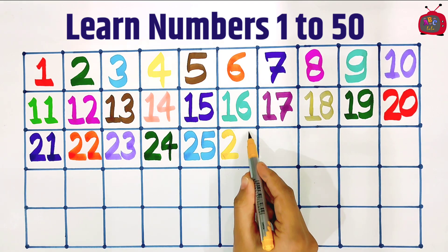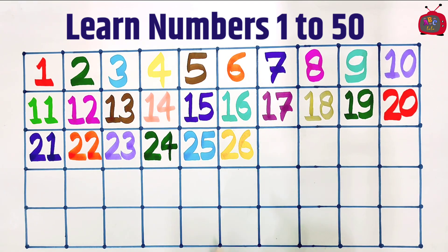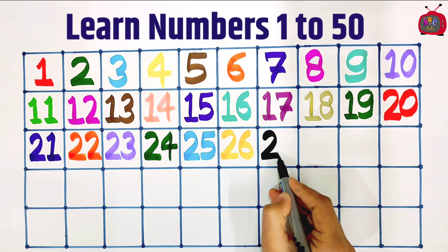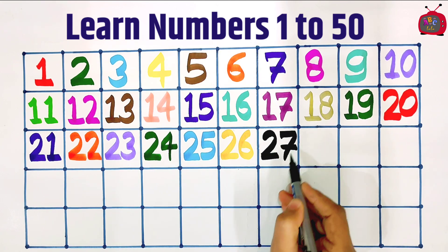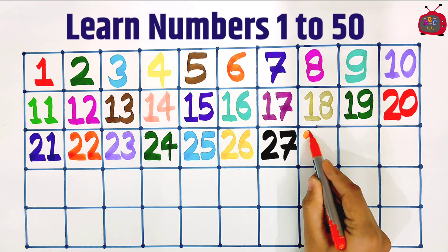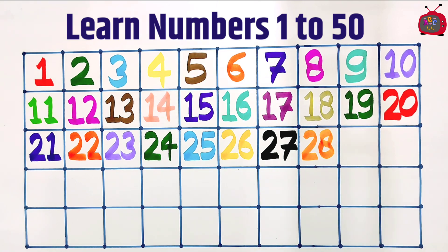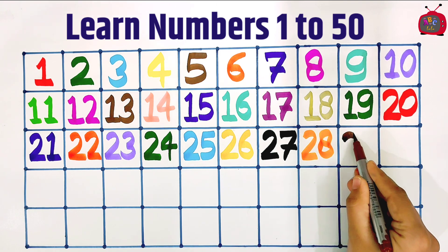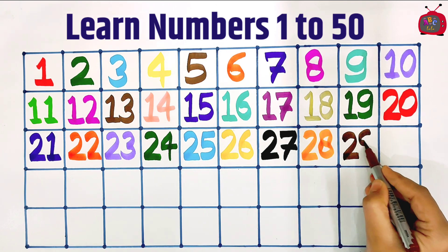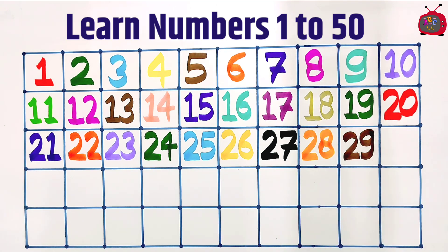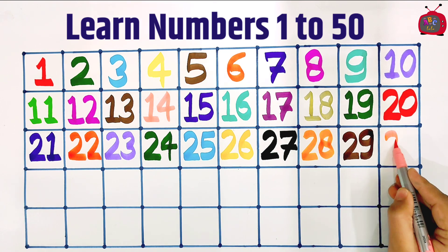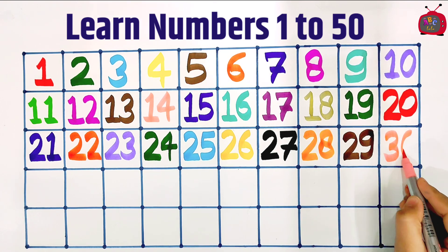Two, six: twenty-six. Two, seven: twenty-seven. Two, eight: twenty-eight. Two, nine: twenty-nine. Three, zero: thirty.